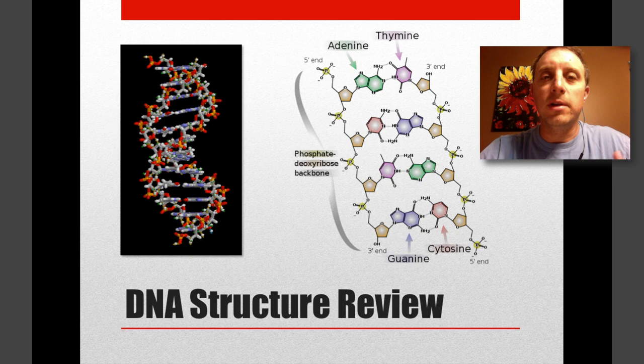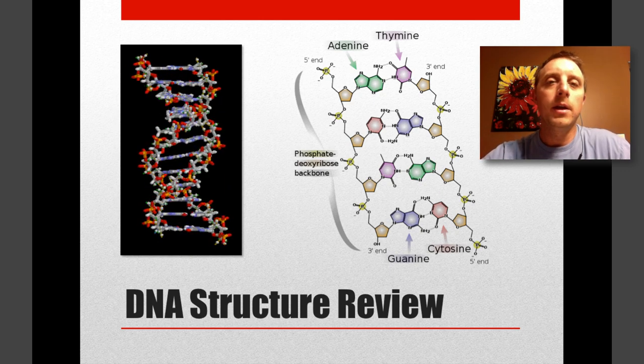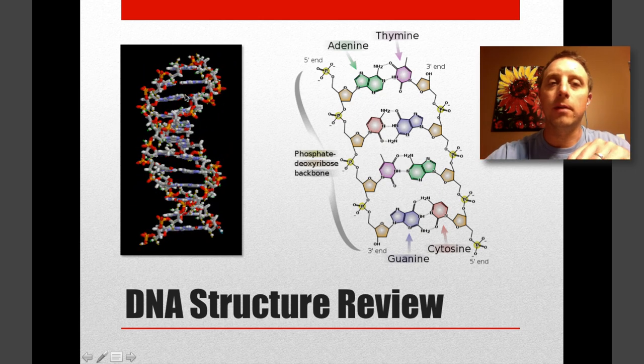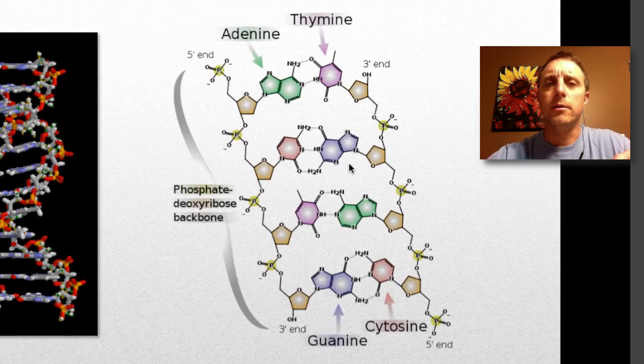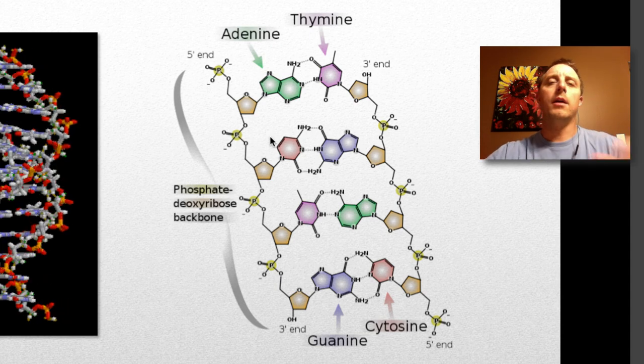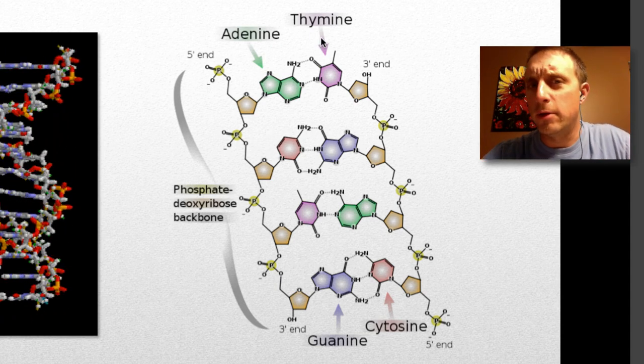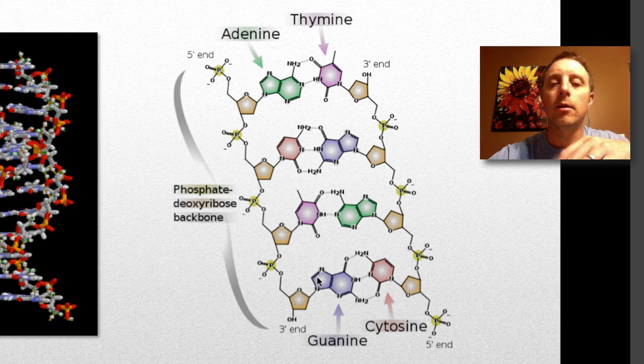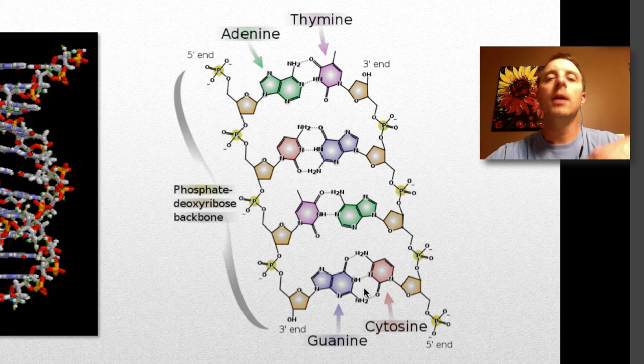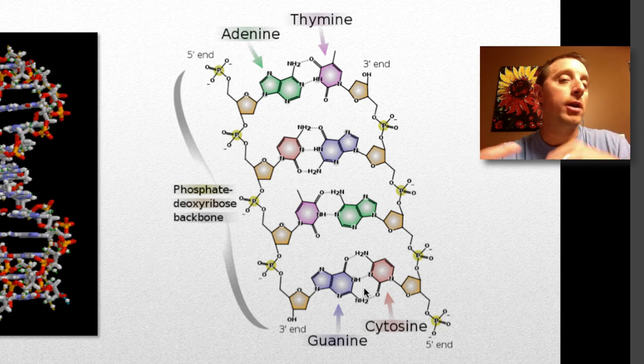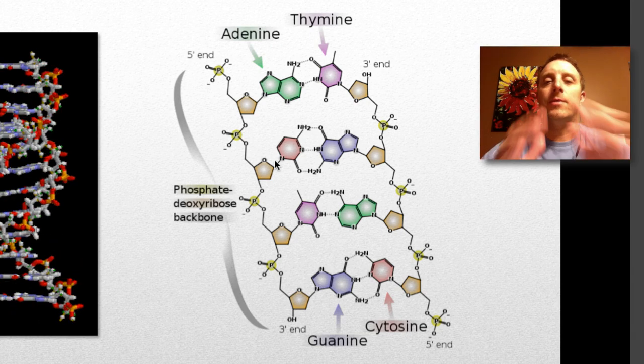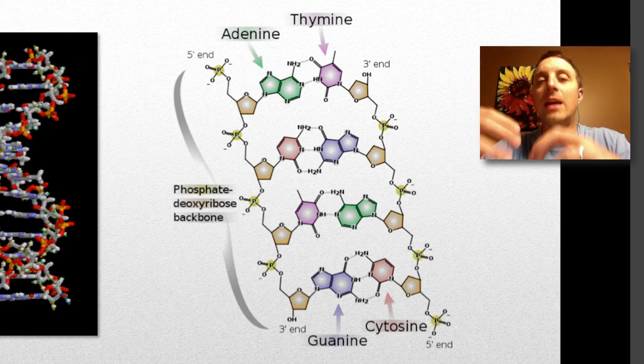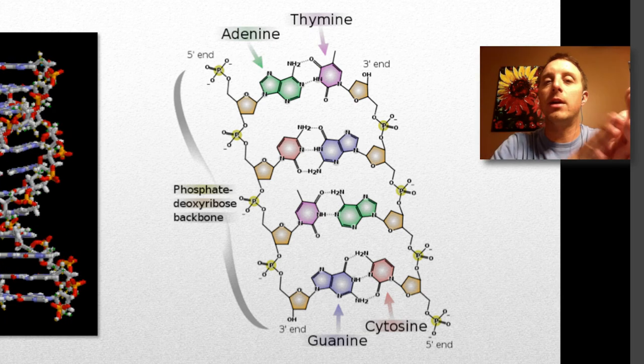If you remember the structure of the DNA molecule, it is the double helix, as shown here in a 3D ball and stick model. If we look a little closer at the two strands, one of the striking features that Watson and Crick noticed right away is the complementary base pairs. Adenine always pairs with thymine, and guanine always pairs with cytosine.